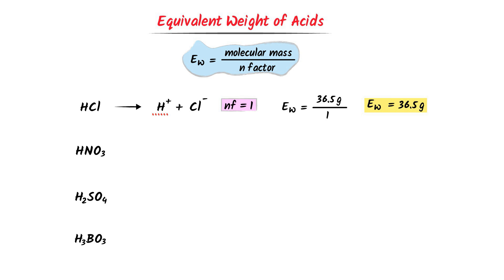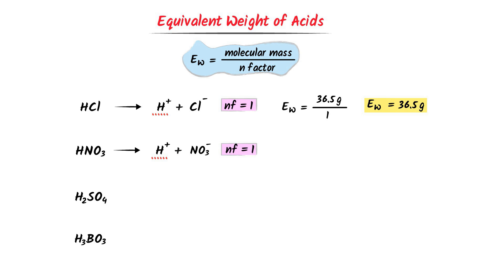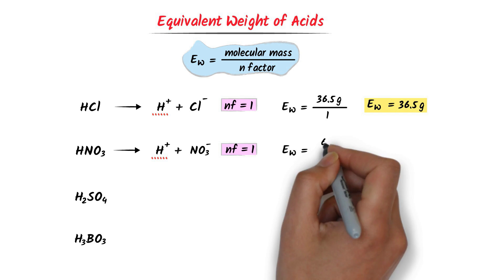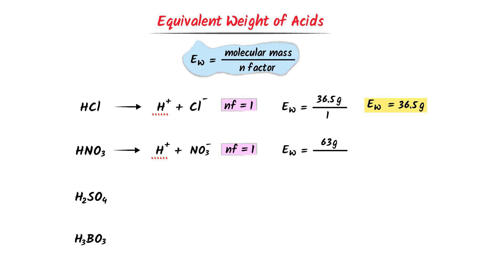In case of nitric acid, it dissociates to hydrogen ion plus nitrate ion. There is only 1 hydrogen ion, so the N factor of HNO3 is 1. Its equivalent weight is equal to the molecular weight of HNO3, which is 63 gram, upon the N factor which is 1. After calculation, I get 63 gram. So the equivalent weight of nitric acid is 63 gram.